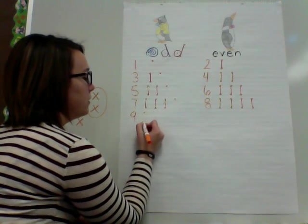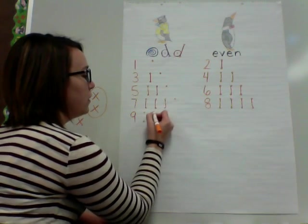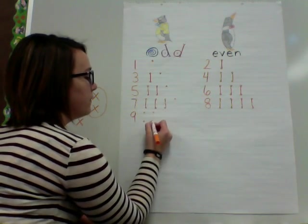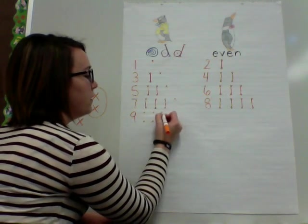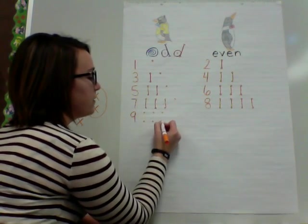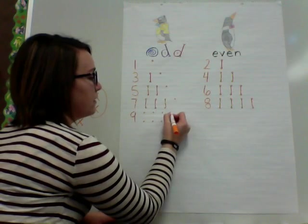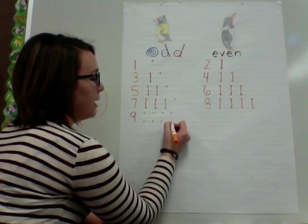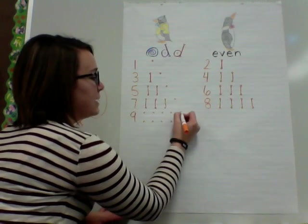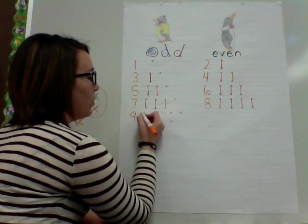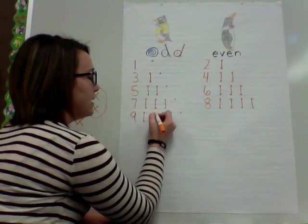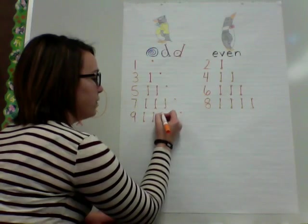Now the number nine: one, two, three, four, five, six, seven, eight, nine. And we will have, once again, a dot left over.